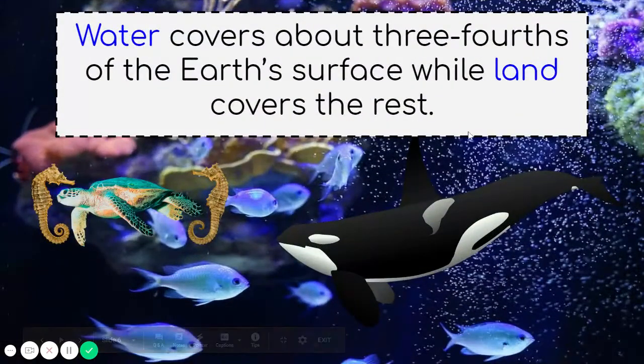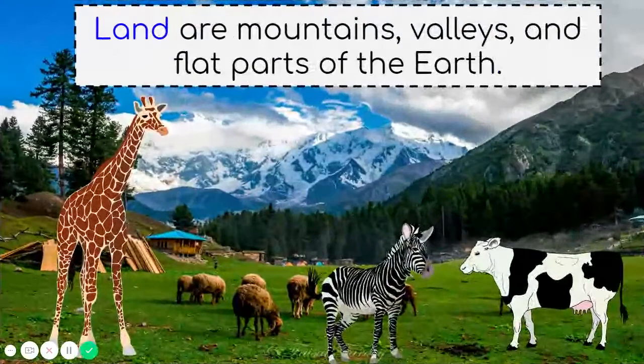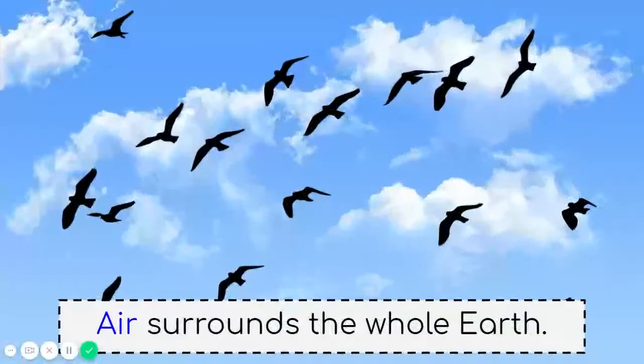Water covers about three-fourths of the Earth's surface while land covers the rest. Land are mountains, valleys, and flat parts of the Earth. Air surrounds the whole Earth.